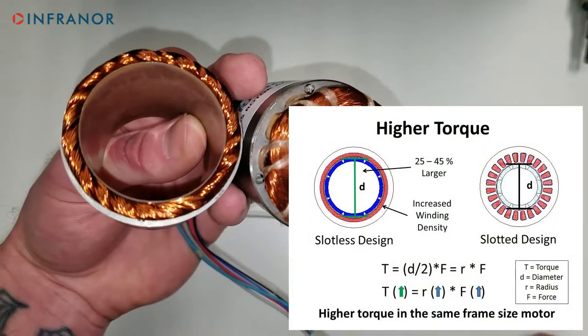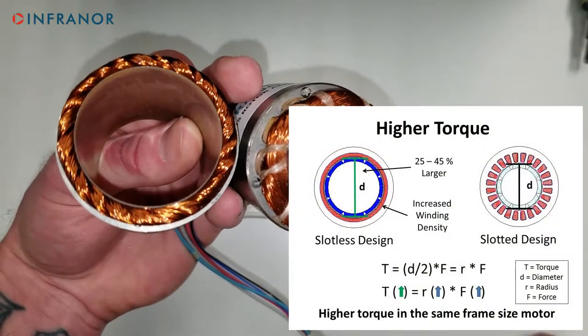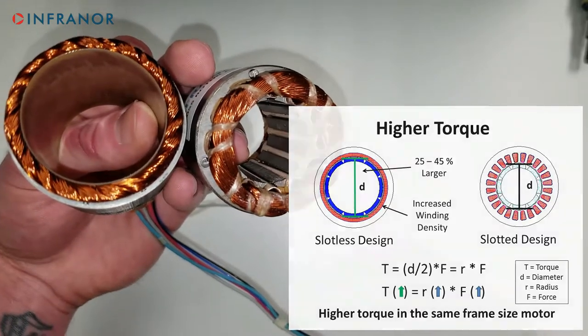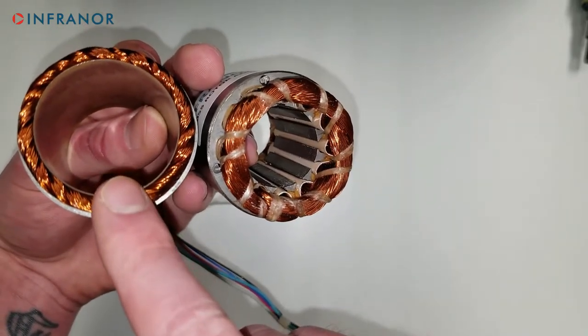Second, we are able to fit a larger diameter rotor, which when looking at the torque equation, we can see how this benefits us. We can also think of it as like a longer lever arm.